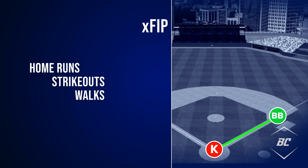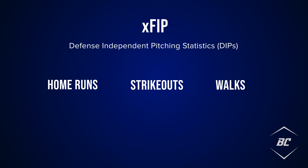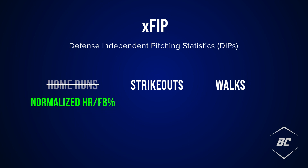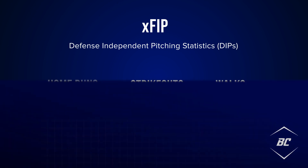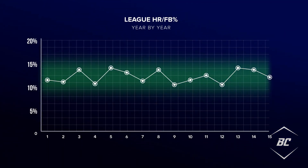This is the main methodology behind XFIP, another member of the defensive independent pitching statistics category. While XFIP still accounts for the same three true outcomes, it normalizes a pitcher's home run per fly ball percentage. Home run per fly ball percentage for individual pitchers tends to regress to the league average over time. League home run to fly ball rates show more predictable trend lines, usually between 10% on the low end to 15% on the high end year over year.